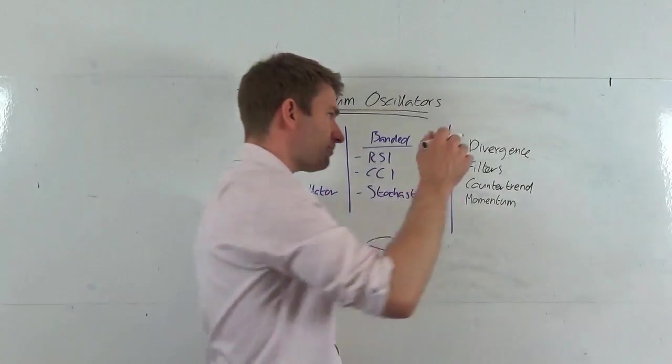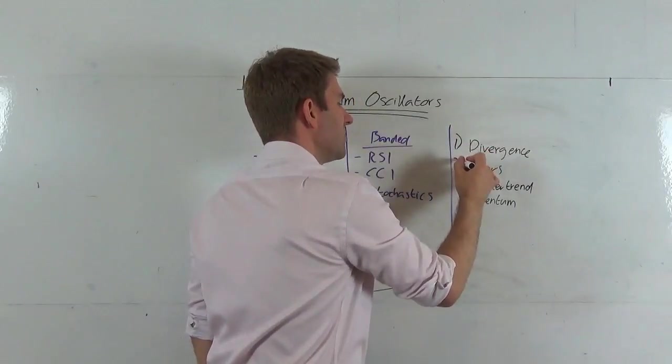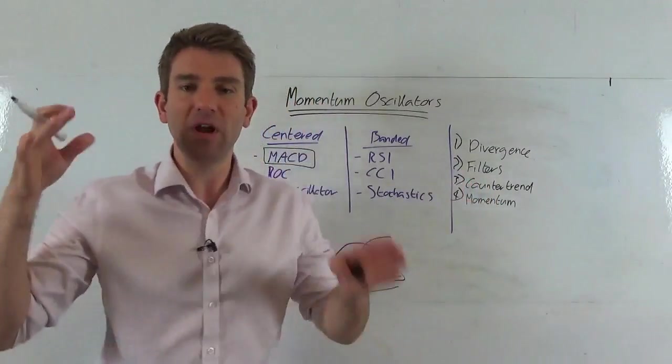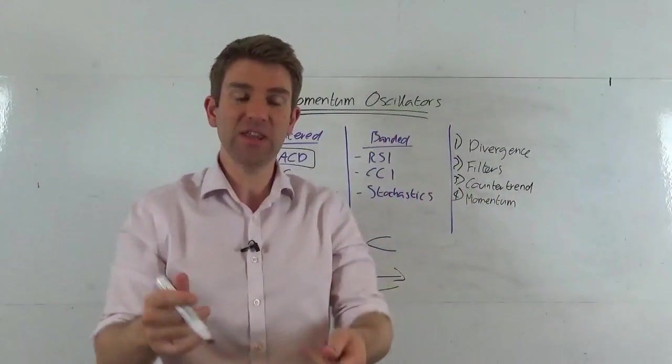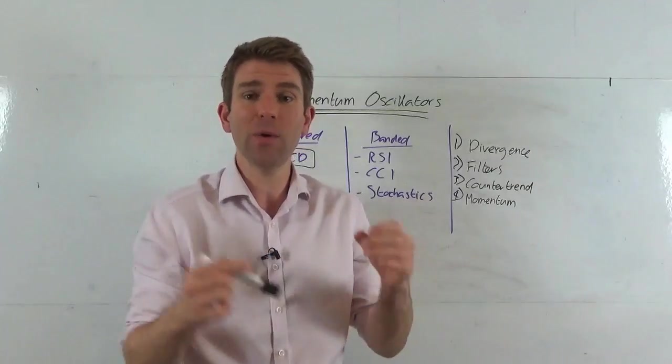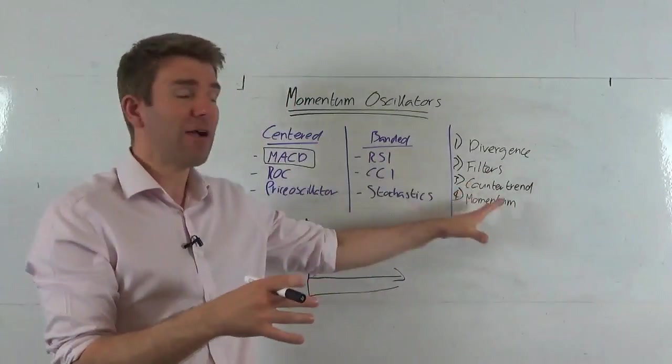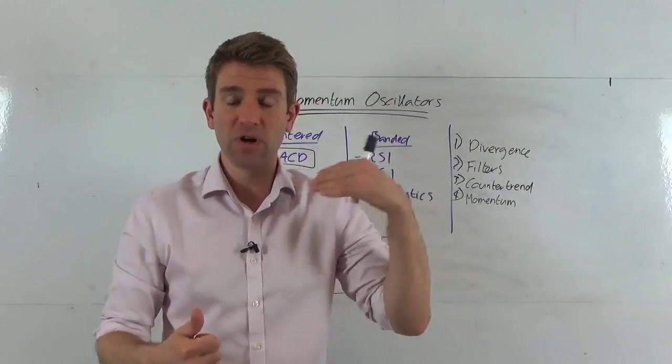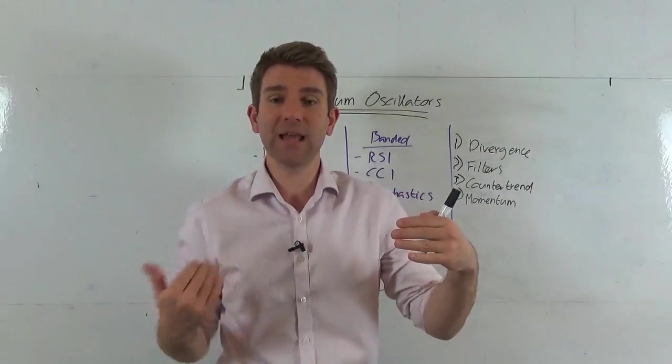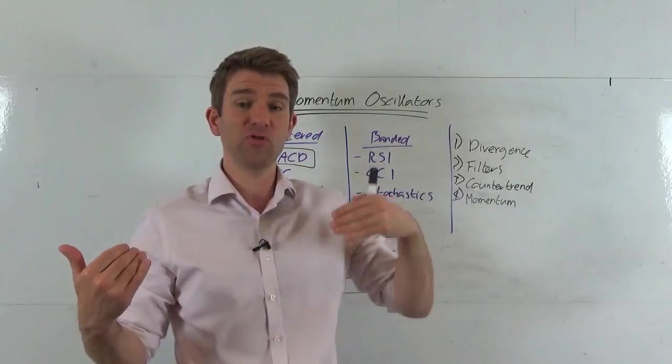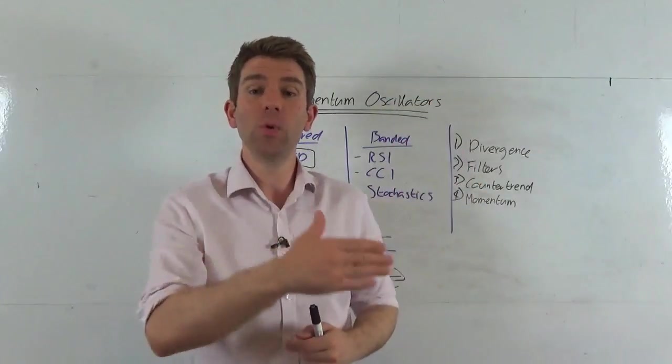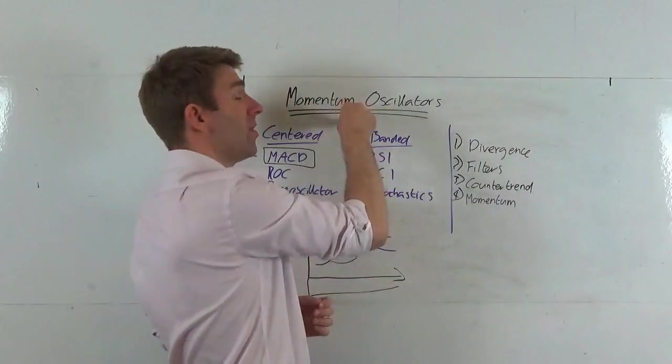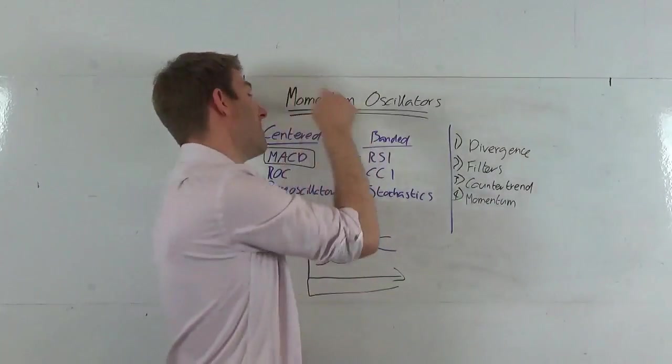The most important thing is how do we use these things to make some money. Number one, the first thing we can do is to use divergence. I've done a whole video on this before, but essentially the way we're looking at divergence is how is price comparative to the oscillator. If the oscillator is in overbought territory, price is moving high, the oscillator comes back down, price now doesn't go to overbought territory but price goes to a new high - we've got divergence indicating potential momentum.